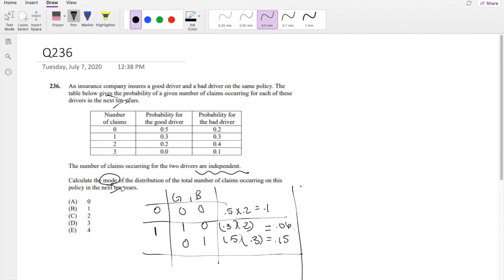So this is the total probability here. Total, 0.1, 0.21.